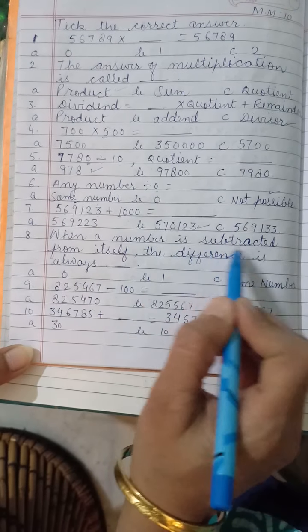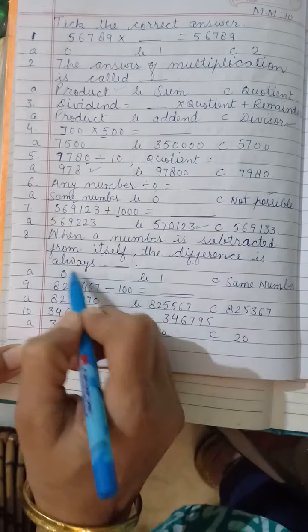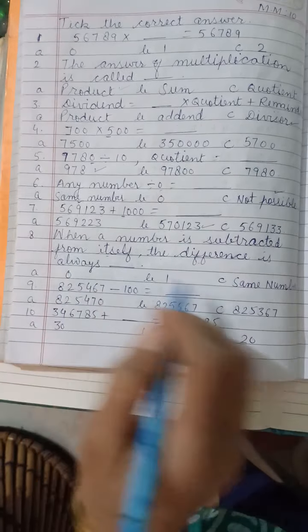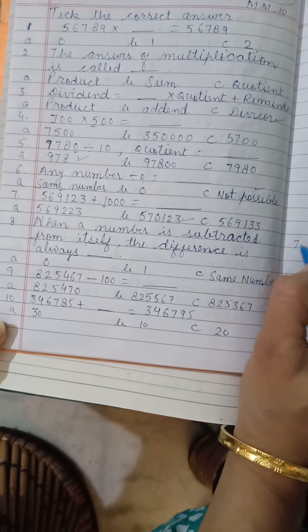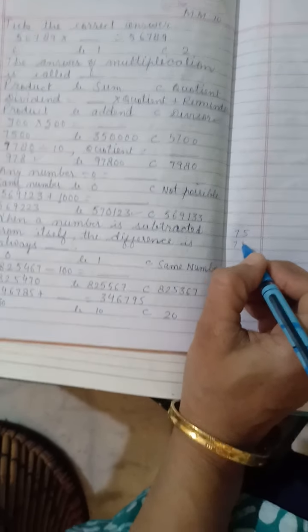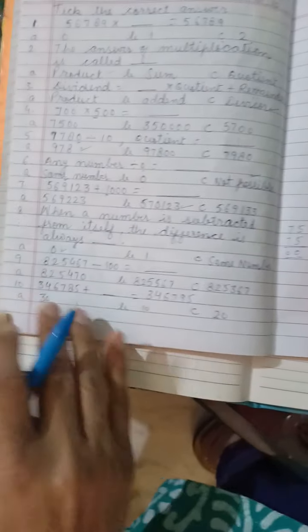When a number is subtracted from itself, the difference is always 0. Because what is given? Suppose I have taken any number that is 75 and I subtract 75 from it. Then what you will get? 0.